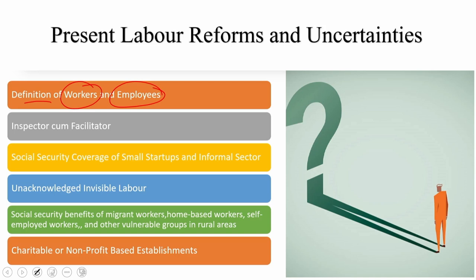Another concern is small startups and informal sectors being left out of social security coverage. There are no specific provisions for social security of employees in small startups, micro, small, and medium enterprises, or workers in small establishments of less than 300 workers. Migrant workers, self-employed workers, home-based workers, and other vulnerable groups in rural areas are not covered under social security benefits, which would enable companies to introduce arbitrary service conditions detrimental to the entire workforce.